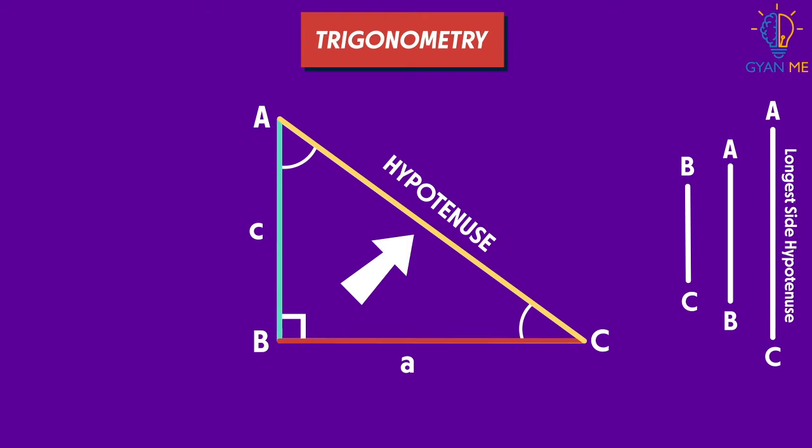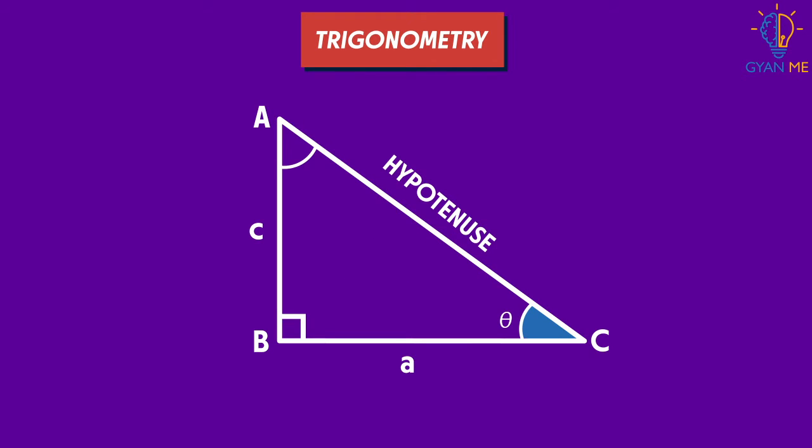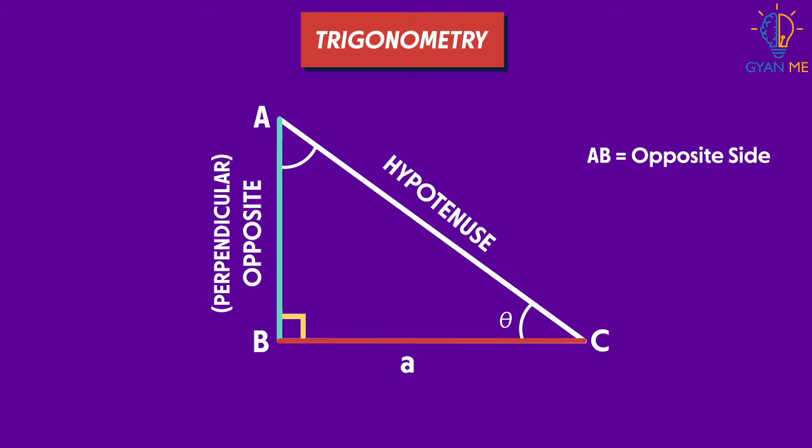Now what about these two sides? To name them, we'll take the help of reference angle. Say this is our reference angle theta. The side opposite to the angle is named so. Yes, I mean this side will be named the opposite side. Now, eventually this side is also standing straight vertically and perpendicular to the horizontal line, isn't it? It is also called as perpendicular in some of your textbooks. Well, both are correct. The opposite side is also the perpendicular for this triangle.